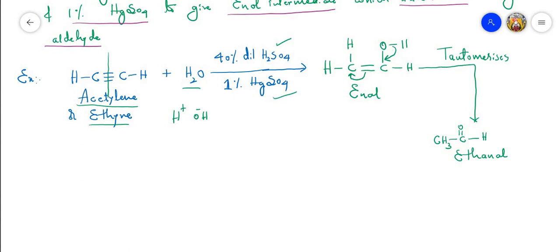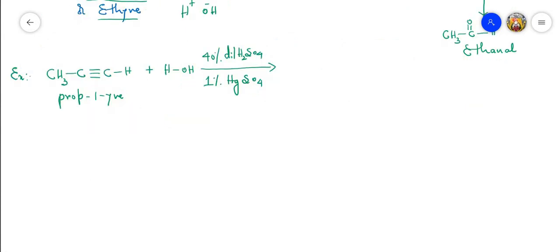The limitation of this reaction is that formaldehyde cannot be prepared by Kucherov's reaction, because the first member of the alkyne series is ethyne (two carbons), and its hydration gives acetaldehyde — not formaldehyde.